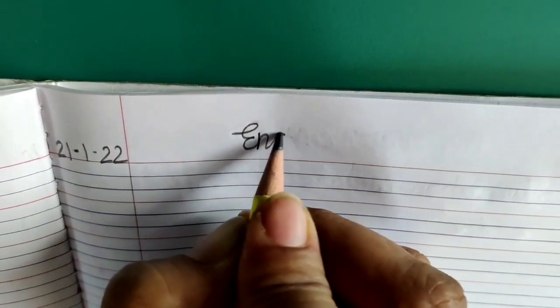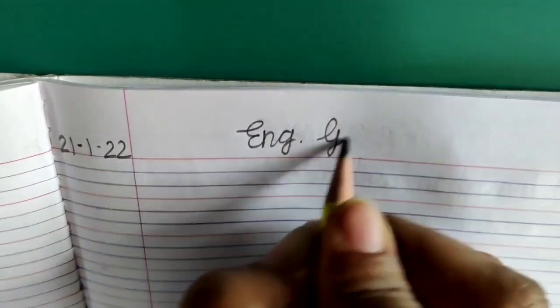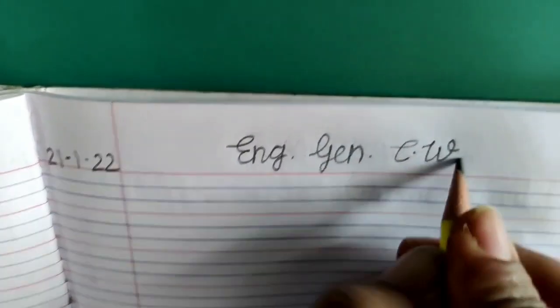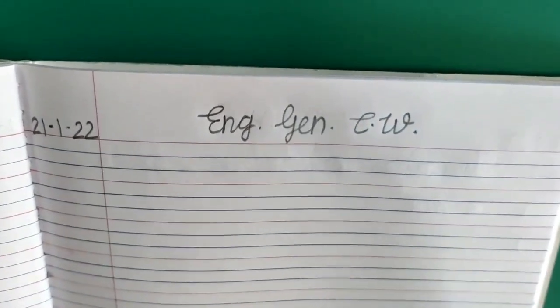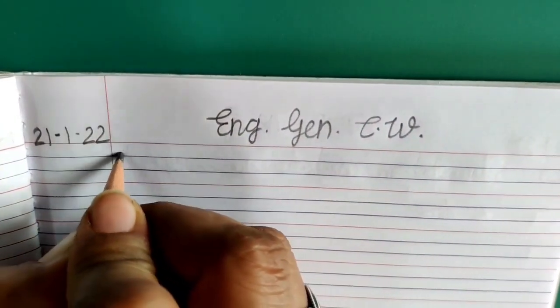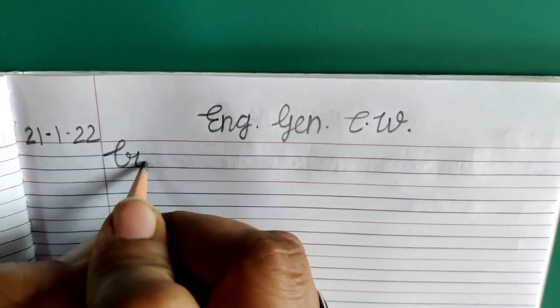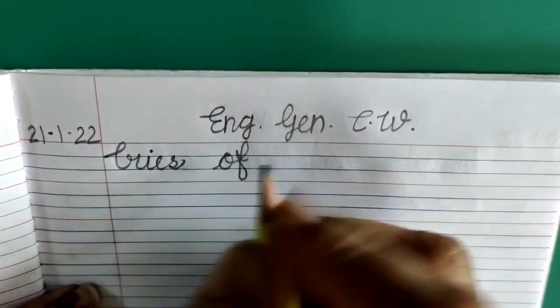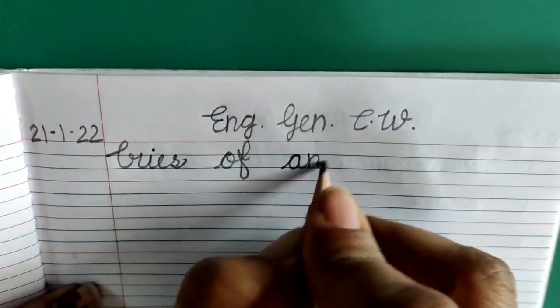At the top write down capital E and G English dot capital G E and General dot capital C dot capital W. English general classwork. Now write down heading capital C R I E S cries O F of A N I M A L S animals, cries of animals.